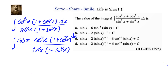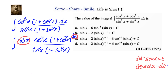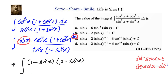Let sin x equal a variable t. Differentiating, we get cos x dx = dt. That means one cos x and dx will go as dt. What is left out: cos²x becomes (1 − sin²x) and 1 + cos²x becomes 1 + (1 − sin²x) = 2 − sin²x. So cos x dx is dt.